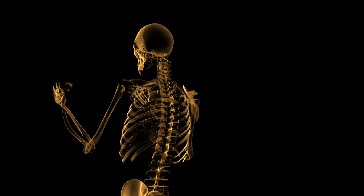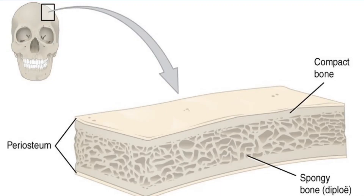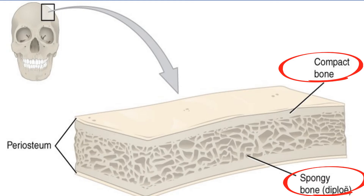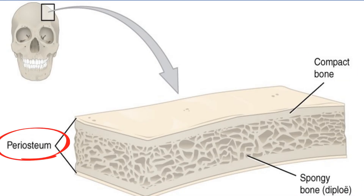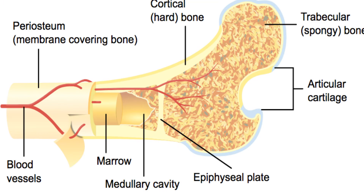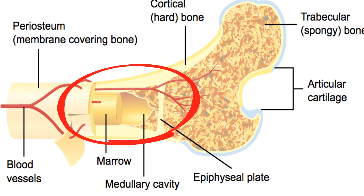Bones are made up of several different layers. Cancellous bone, also called spongy bone, stores the red bone marrow where blood cells are made. Compact bone is hard and dense and gives strength to the hollow part of the bone. Periosteum is a protective layer where there is cartilage and the ligaments and tendons attach. The marrow cavity contains the yellow bone marrow where white blood cells are made.